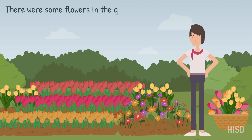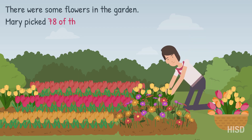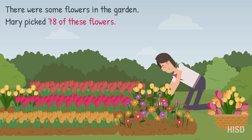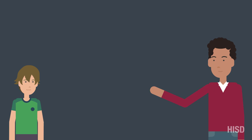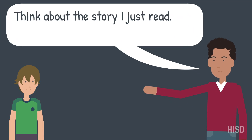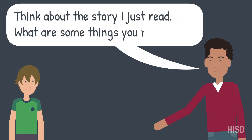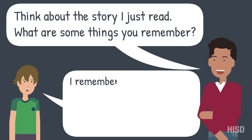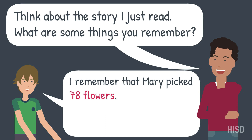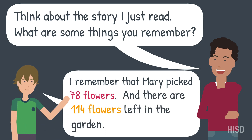There were some flowers in the garden. Mary picked 78 of these flowers. Now there are 114 flowers left in the garden. Think about the story I just read. What are some things you remember? I remember that Mary picked 78 flowers and there are 114 flowers left in the garden.